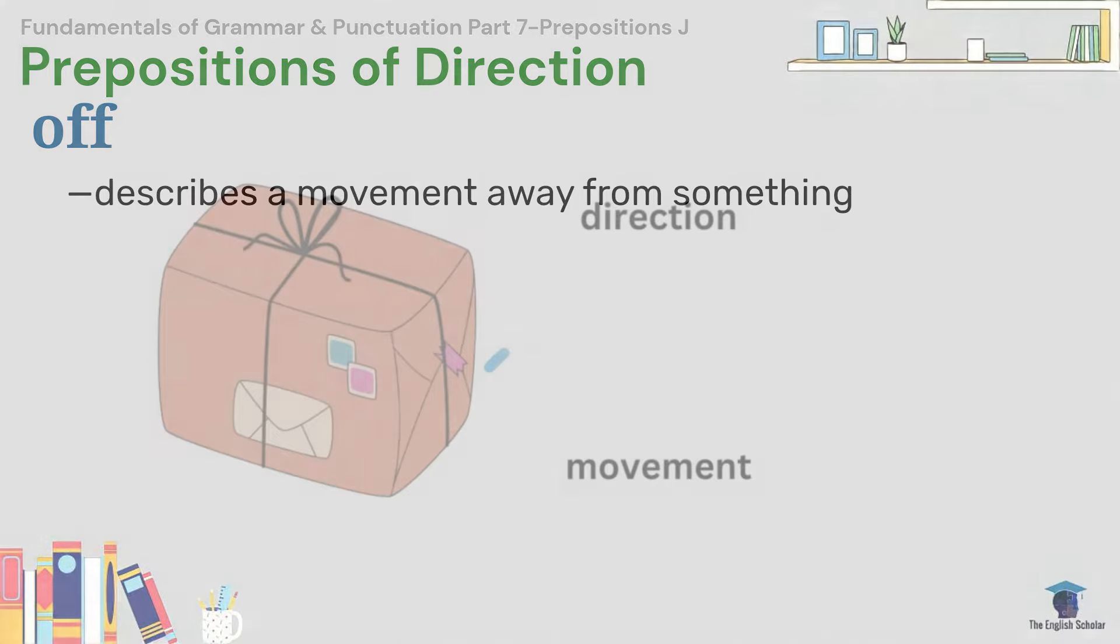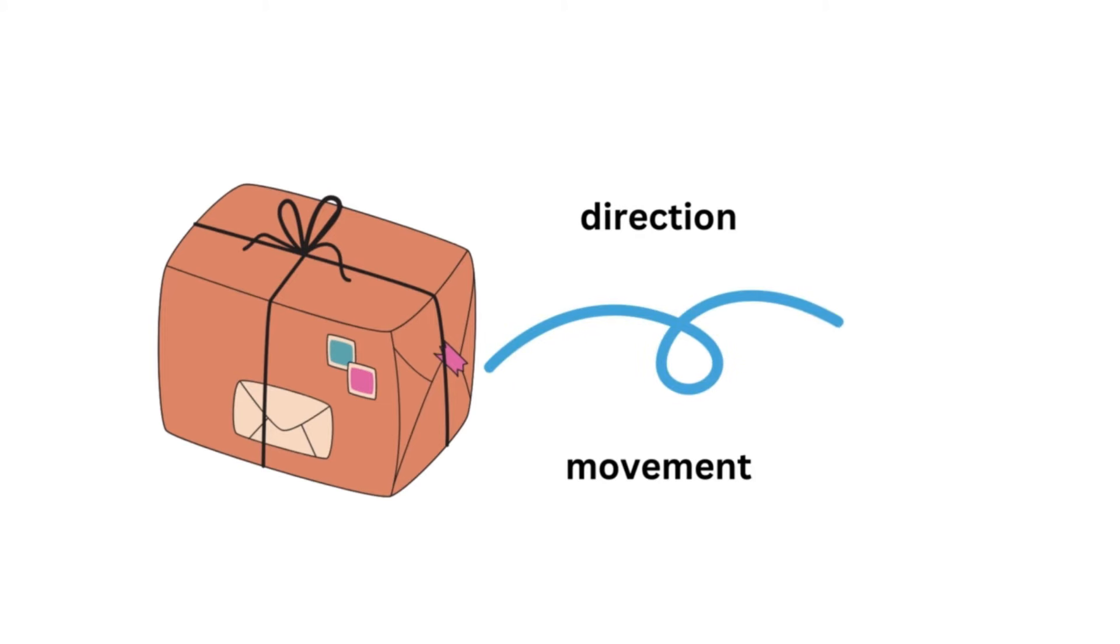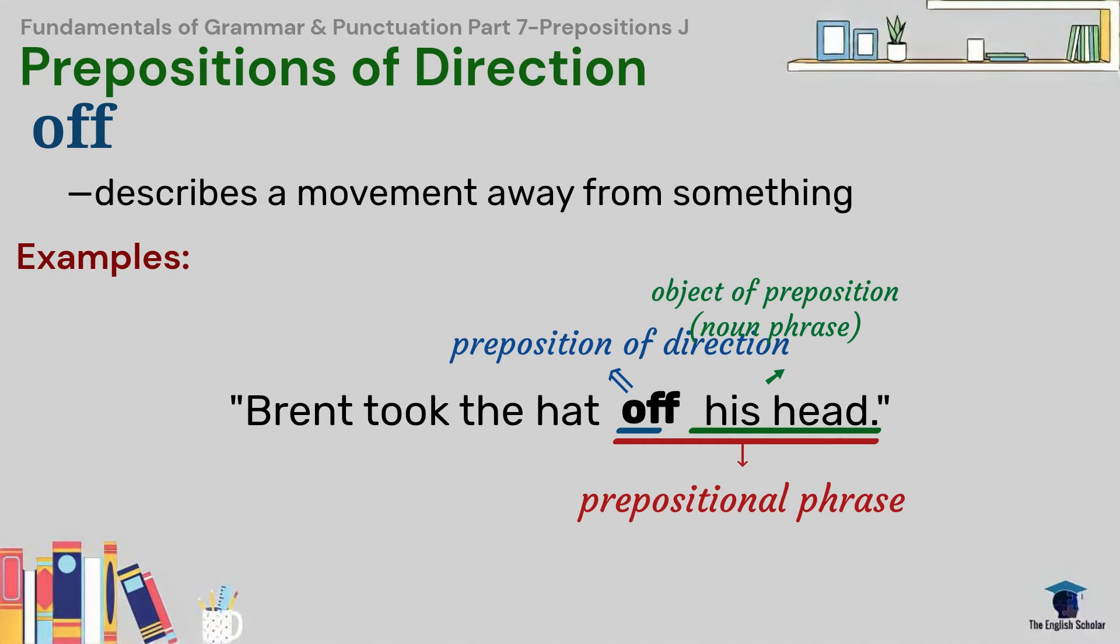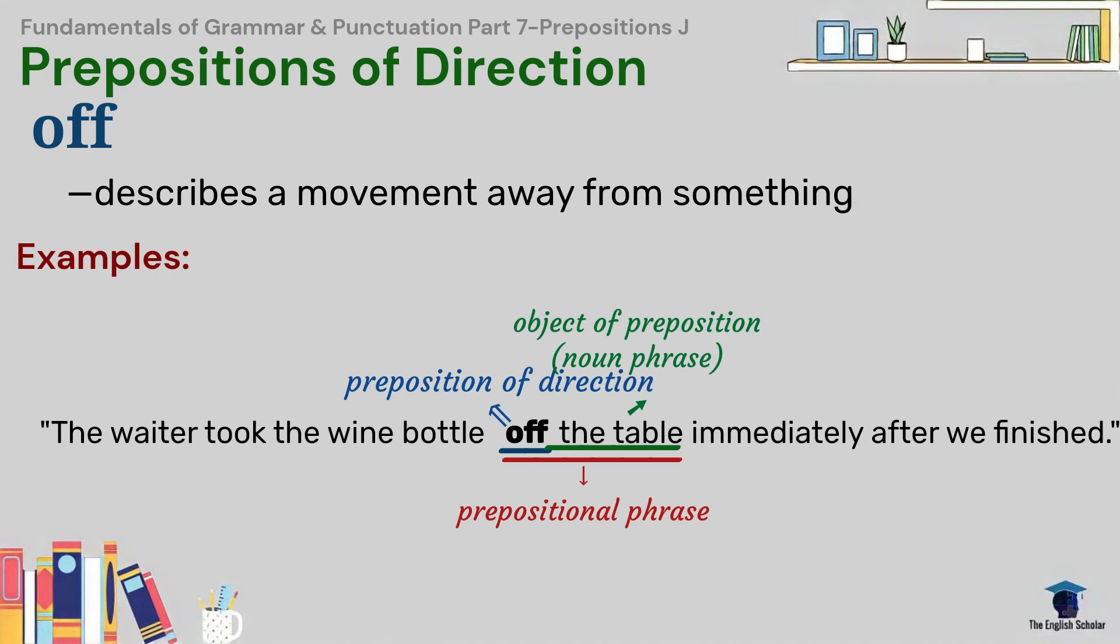Off describes a movement away from something. For example, Brent took the hat off his head. The waiter took the wine bottle off the table immediately after we finished.